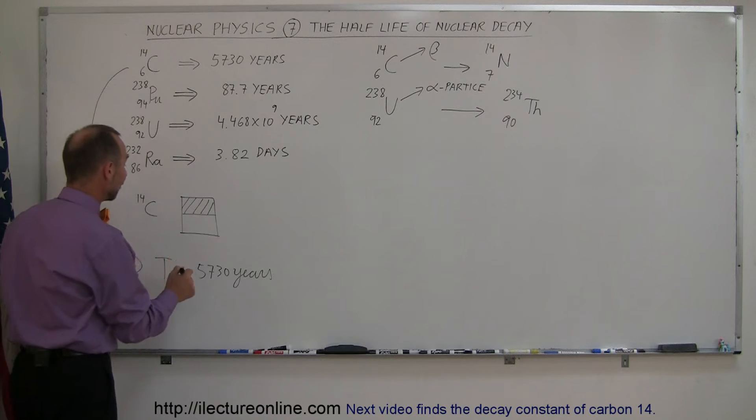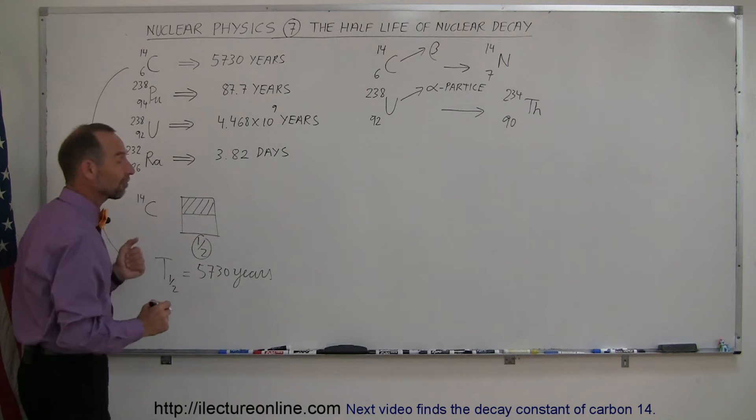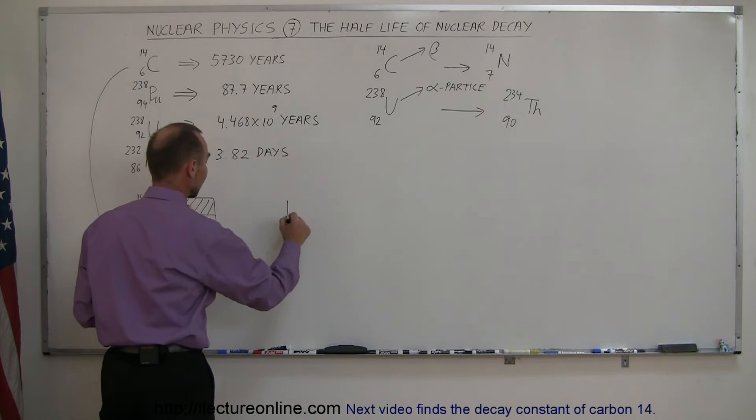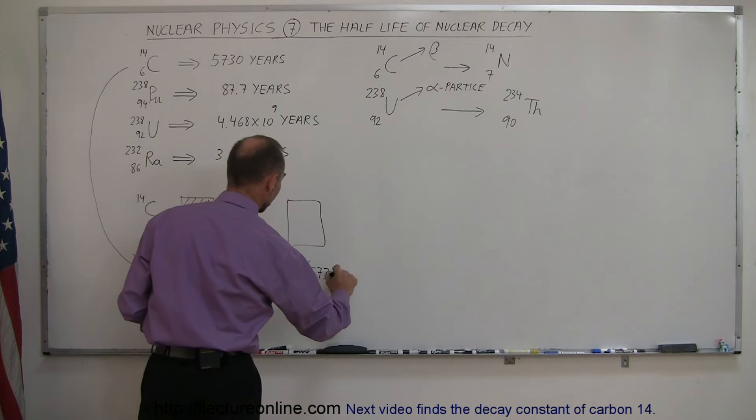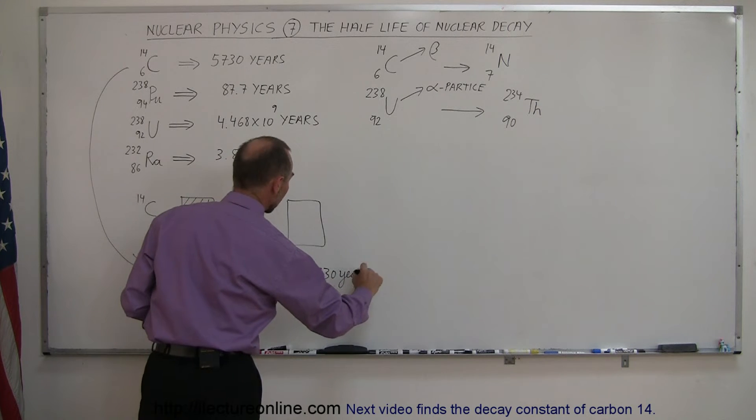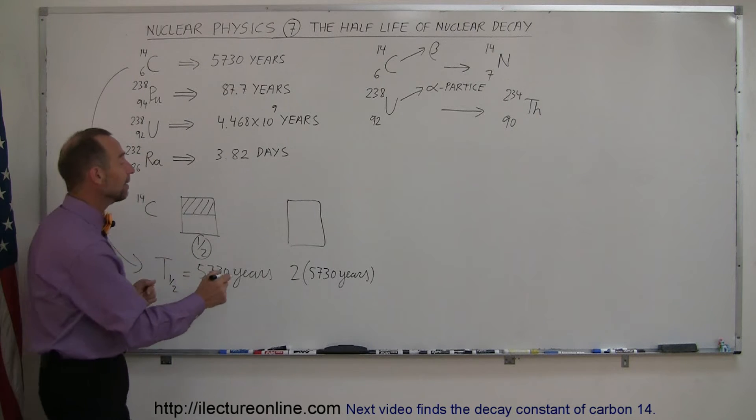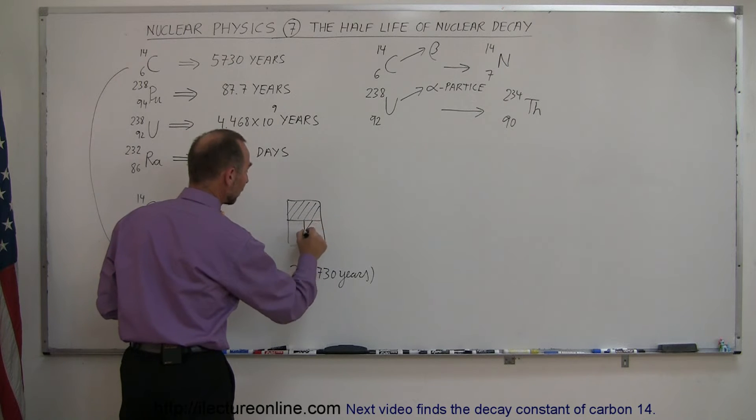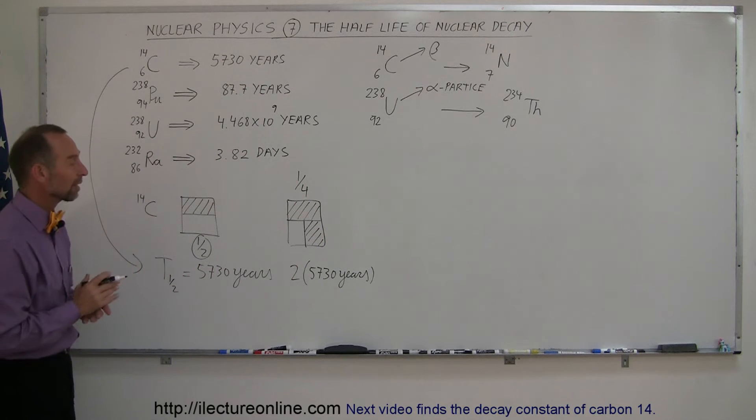What that means is after one half-life, you now have half of the radioactive carbon-14 remaining. After another half-life, after two half-lives, so two times 5730 years, now half of what was remaining will now also have decayed. So the first half is gone after one half-life, and what's remaining, half of that will now decay, and now you're left with one-quarter of the original radioactive sample still being radioactive carbon-14.